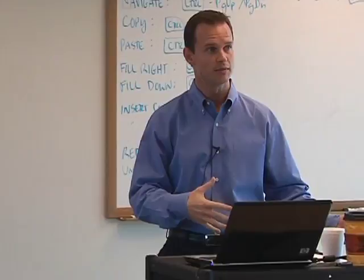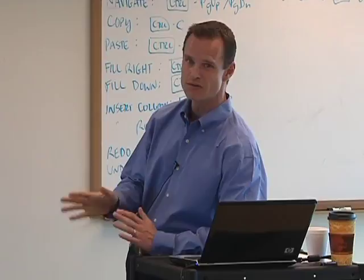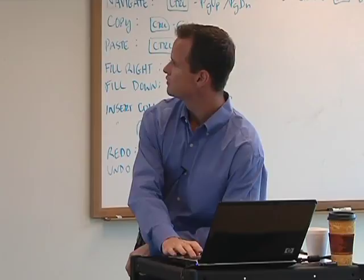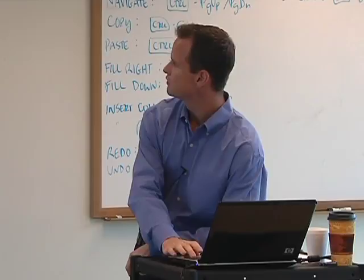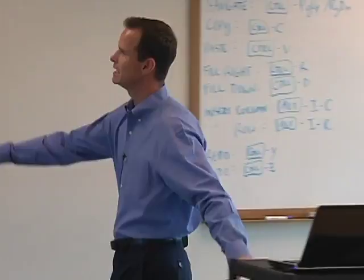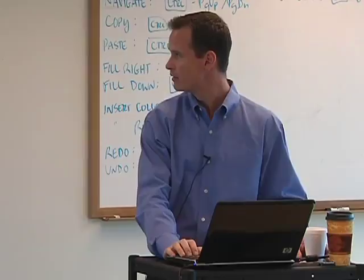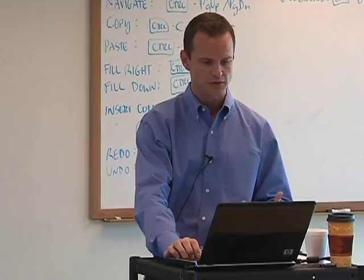We're levering this deal 4.5 times on trailing 12 months EBITDA, meaning our debt is 4.5x EBITDA. As a percentage of total capitalization, we're financing at 72% debt and roughly 28% equity. We also specified all our interest rates: revolver, term loan, and senior bonds all pay cash interest at stated rates. Our mezzanine piece — the unsecured notes with warrants — pays interest in kind, meaning we accrue it to the ending balance each year and pay it when we sell.